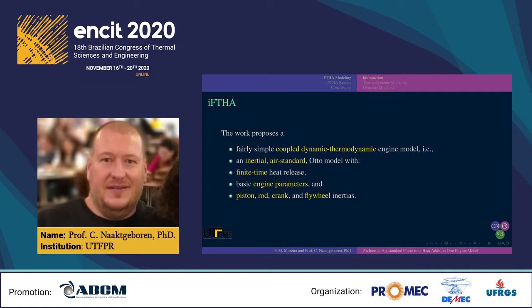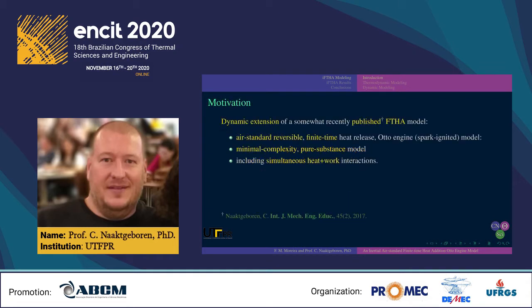By way of introduction to the IFTAJ, the work proposes a fairly simple coupled dynamic thermodynamic engine model — that is, an inertial air standard auto model with finite time heat release, basic engine parameters, and piston, rod, crank, and flywheel inertias. The motivation is to create a dynamic extension of a recently published FTAJ model, which is an air standard reversible finite time heat release model for spark ignited engines — a minimal complexity pure substance model including simultaneous heat and work interaction.